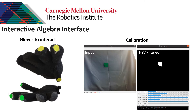There is a button in the calibration section that will save these values in an array that will be used by the interface to filter the fingertips, then select the centers and apply post-processing steps that will be explained later.